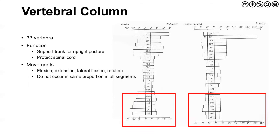There are 33 total vertebrae, and the function here is to support the trunk for upright posture — what we call the HAT unit: head, arms, and trunk. Particularly when we get to the lumbar spine, highlighted here in red, the primary movements are flexion, extension, as well as lateral flexion and rotation. However, these do not occur in the same proportion throughout all segments. The one exception is rotation — as we move into the lower lumbar spine, what we call the lumbosacral spine, there is a loss of rotation.